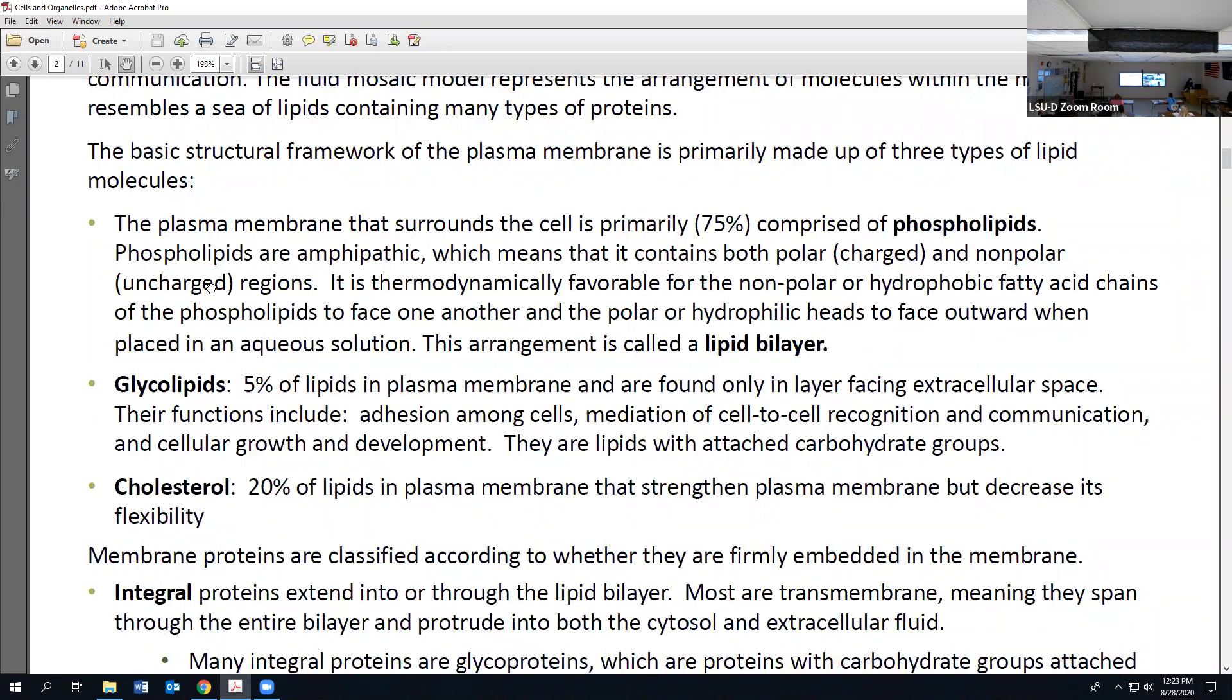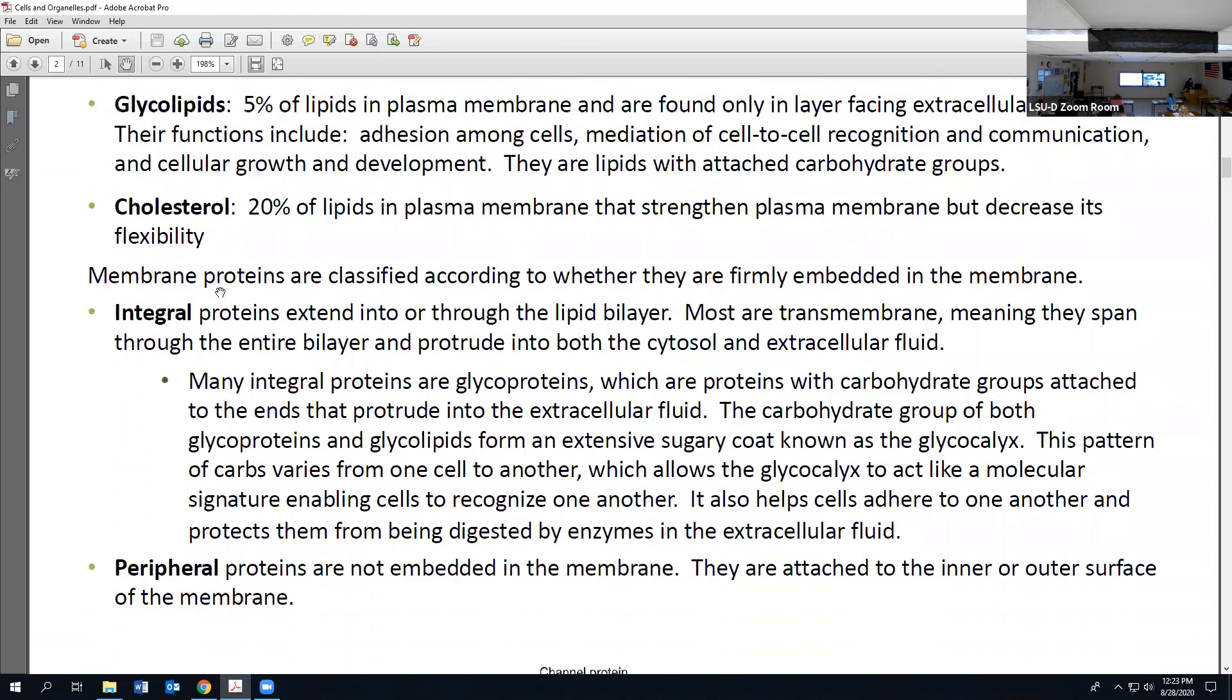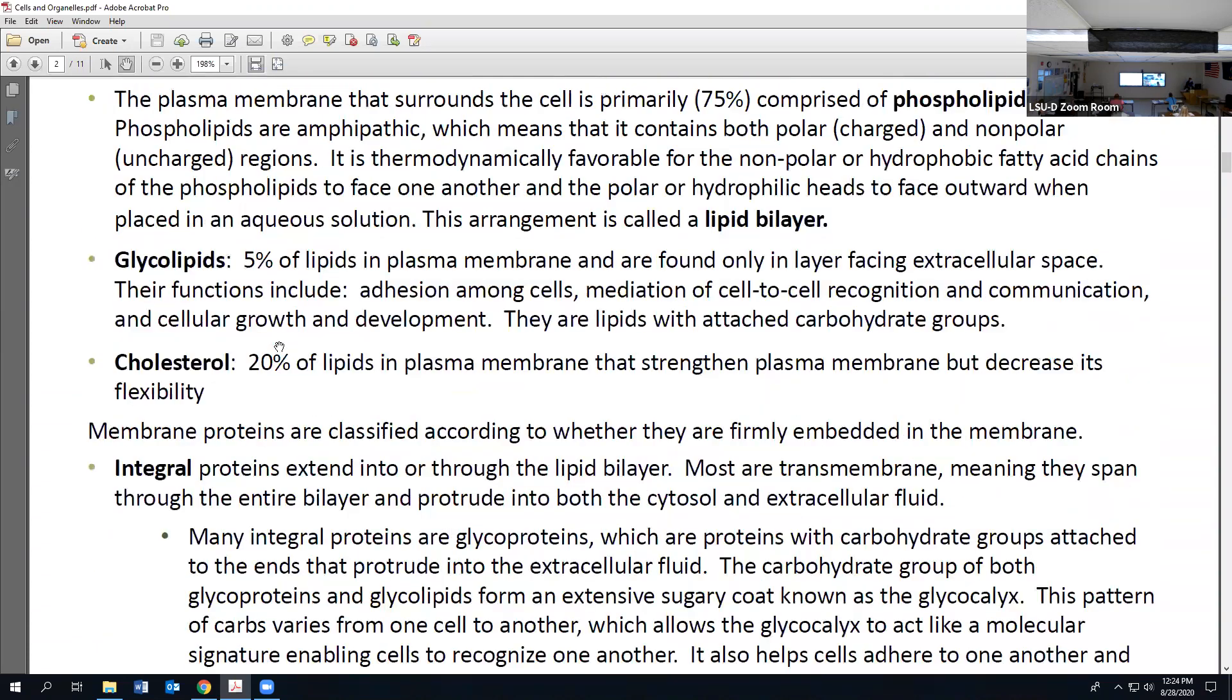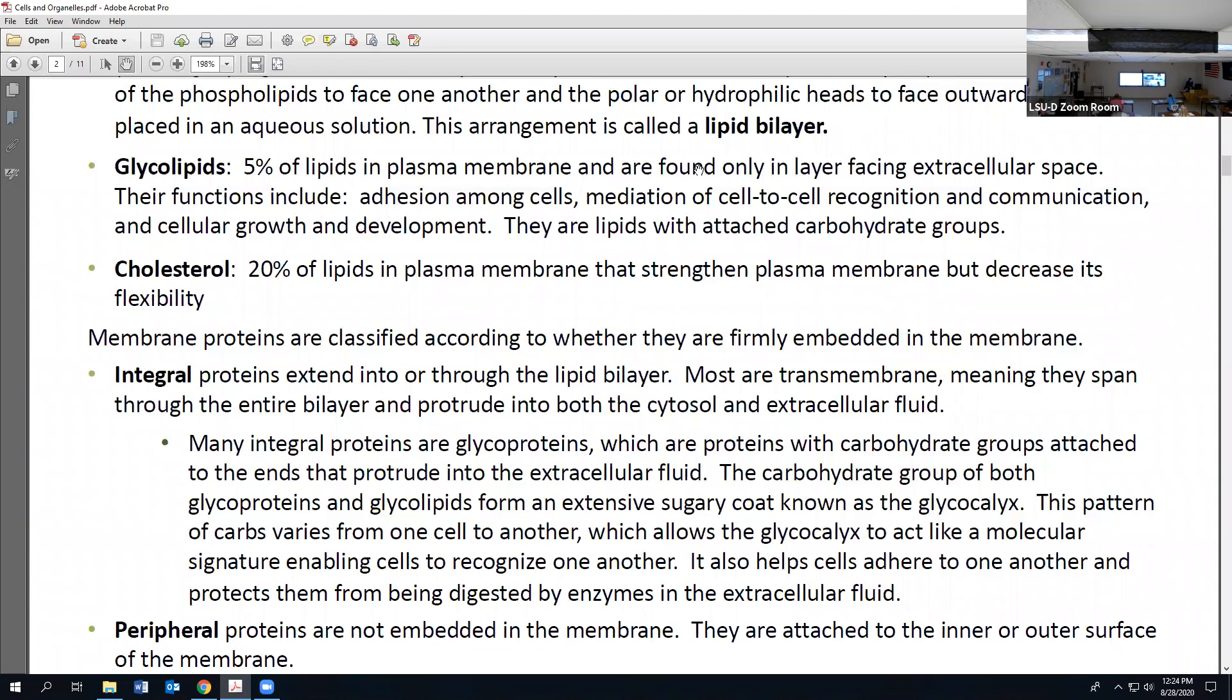The cytosol, which is the fluid inside the cell, has water, and the extracellular fluid outside the cell also has water. This really relates to that ability to control what can come in and out of the cell. The fancy way to describe the uniqueness of phospholipids is called amphipathic. Next are the glycolipids - any time you see the prefix glyco, that's referring to a sugar or carbohydrate.